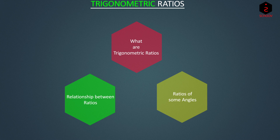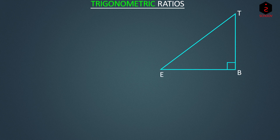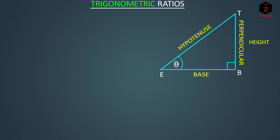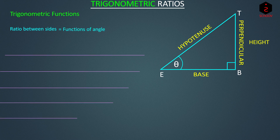Why do we need to study trigonometric ratios? It's not tough to understand. Let's bring back the triangle from the first topic. We need to find the relation between the base and height of a triangle through angle theta. We call the height the perpendicular and the third side the hypotenuse. Since angles are measured in degrees and sides in meters or centimeters, we can't just equate them. Instead, we find ratios between sides and equate them to functions of angles called trigonometric functions. There are six of them: sine, cosine, tangent, cotangent, secant, and cosecant.